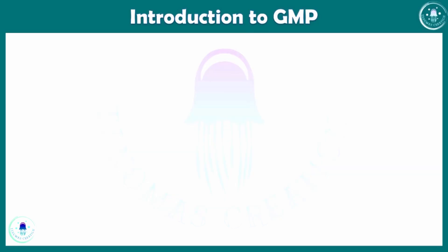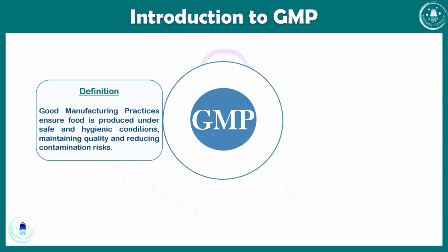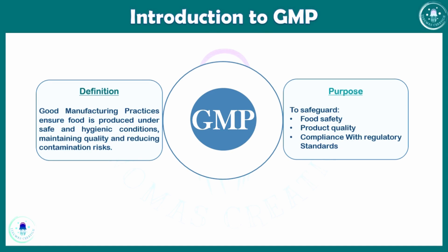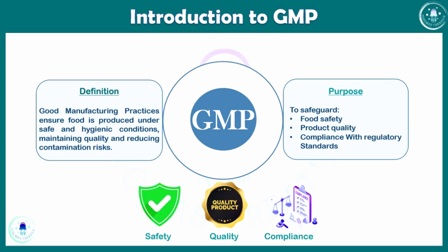What is GMP? Good manufacturing practices are regulations that ensure food and the production of food is carried out under safe and hygienic conditions, maintaining quality and reducing contamination risk. The purpose of GMP in food industry is to safeguard food safety, product quality, and compliance with regulatory standards.